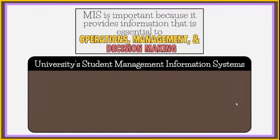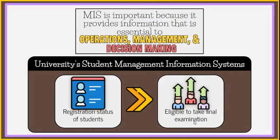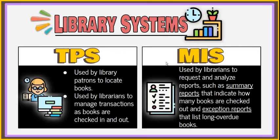MIS is important as it provides information essential to operations, management, and decision-making functions. An example is a university student management system, which can generate reports about students' registration status to determine who is eligible to sit for end-of-semester examinations. In a library system, the TPS is used by patrons to locate books and by librarians to manage check-in and check-out transactions, while the MIS is used by librarians to request summary reports of checked-out books and exception reports listing long-overdue books.